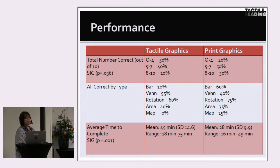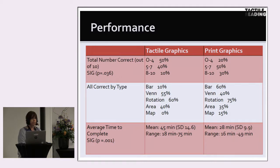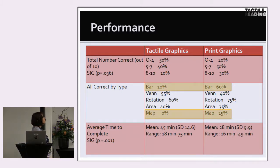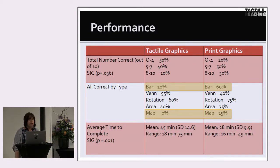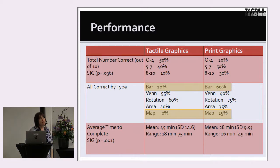Looking at performance, there were ten multiple choice questions across the five items. For tactile graphics users, 50% got zero to four correct, compared to print graphics users where 50% were getting five to seven correct. Only 10% of tactile graphics users got eight to ten correct. The map was challenging for both groups. Interestingly, when I asked students whether a graphic was challenging, all students said the bar graph was easy — but only 10% of tactile graphics users got all bar graph questions correct. So there was something going on between their perception of how well they did and their actual performance.